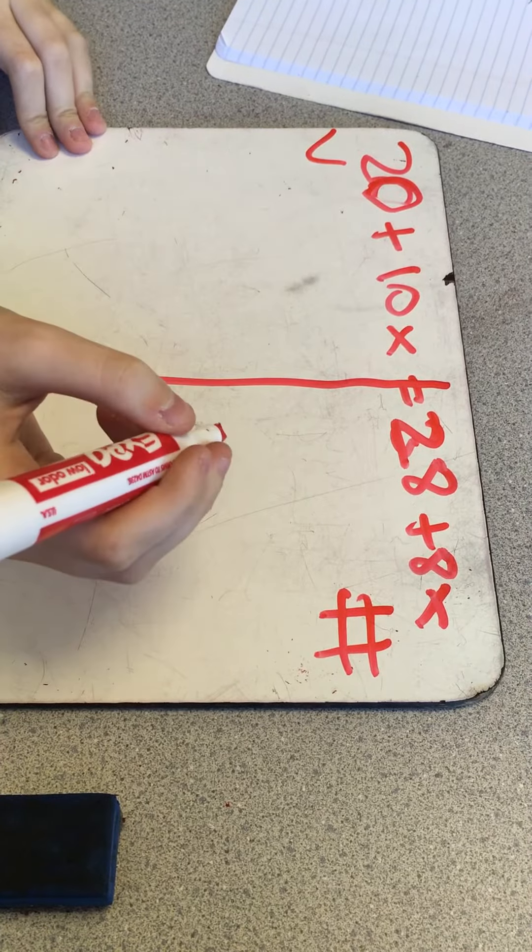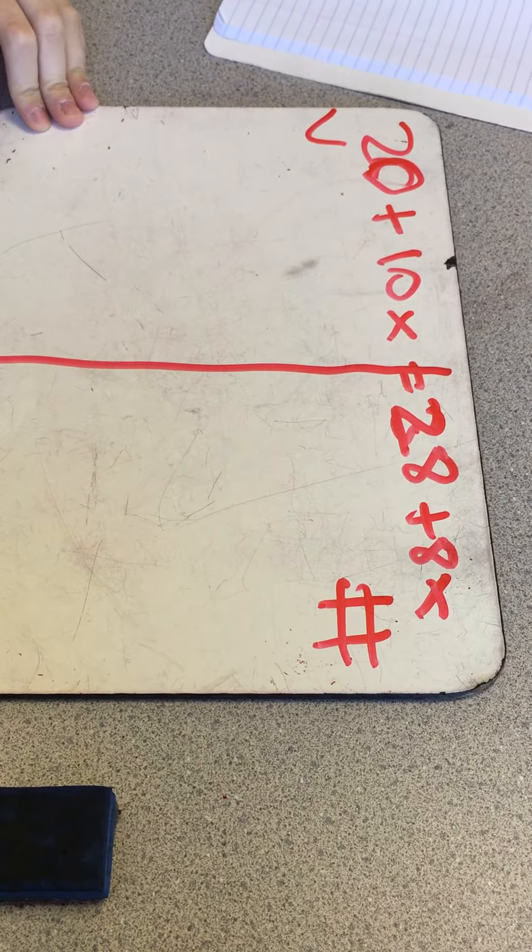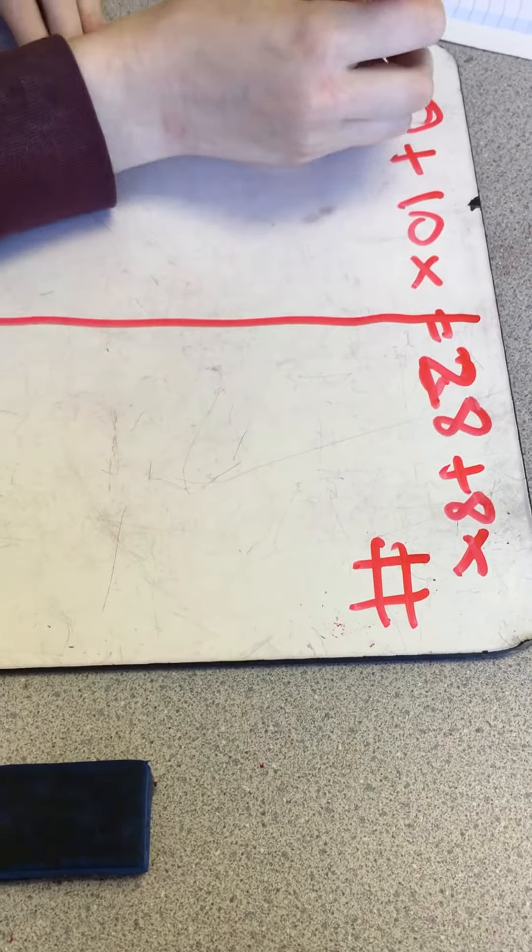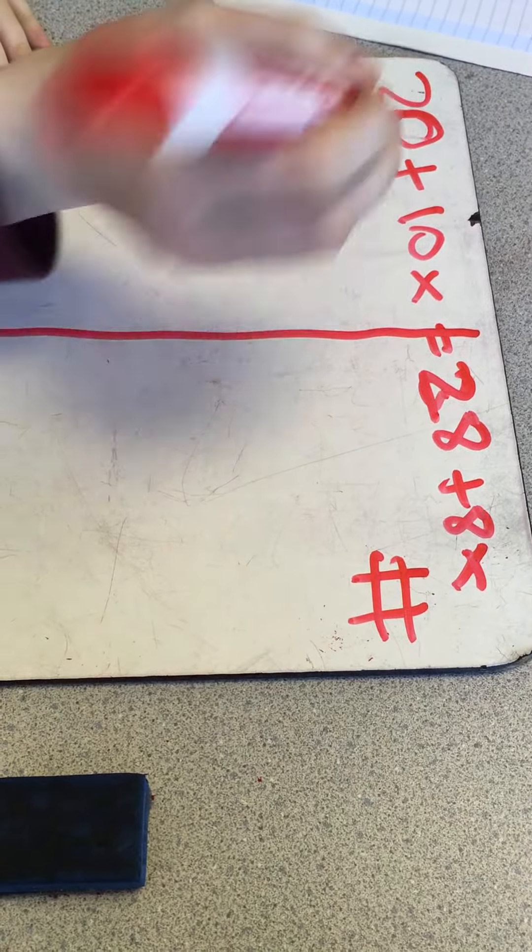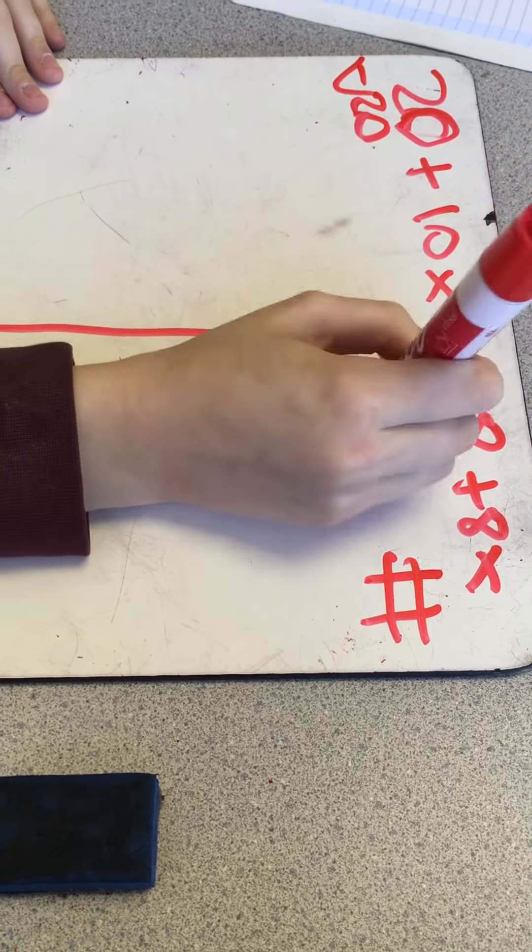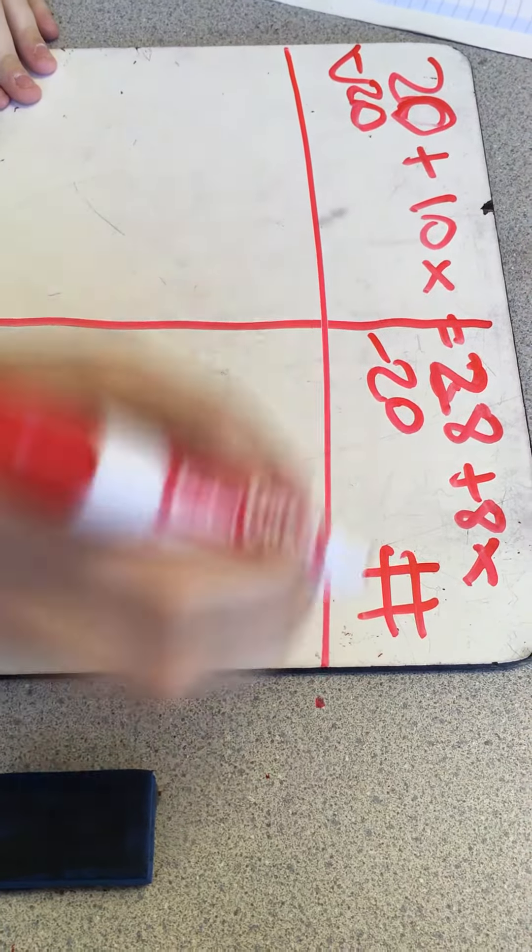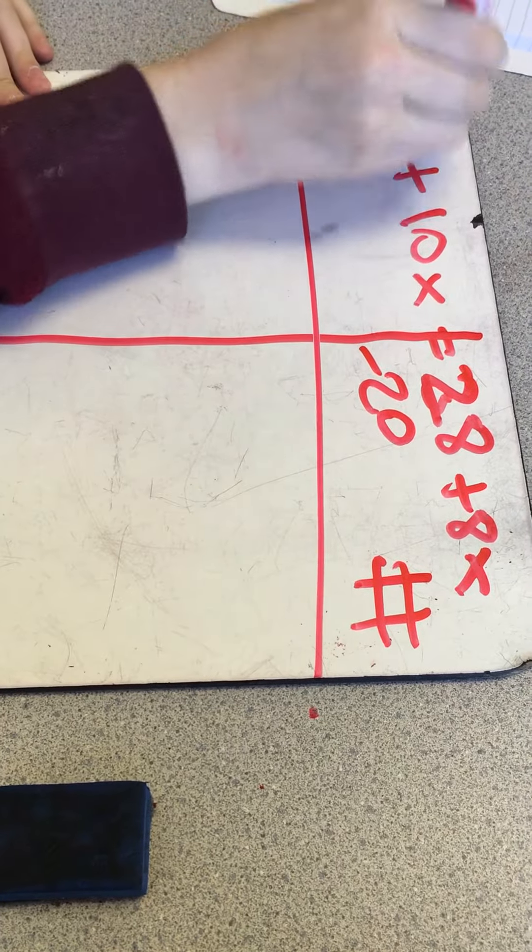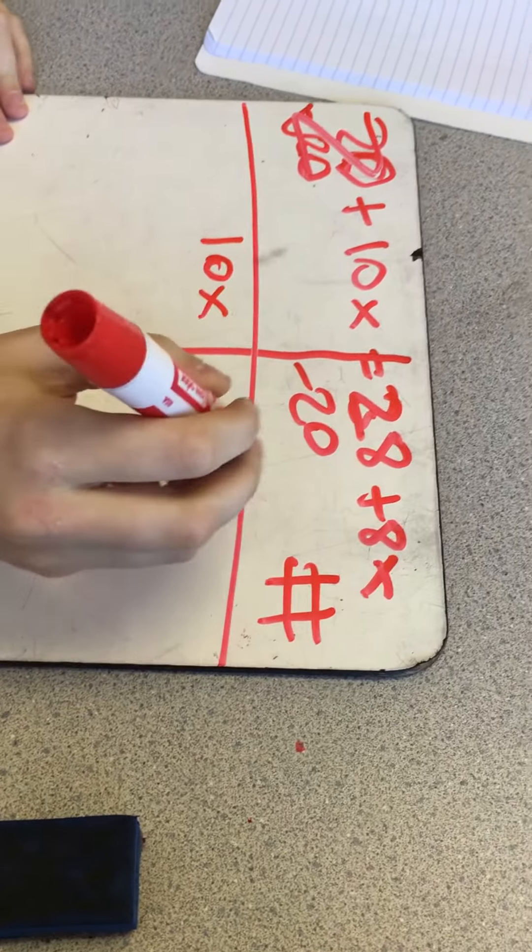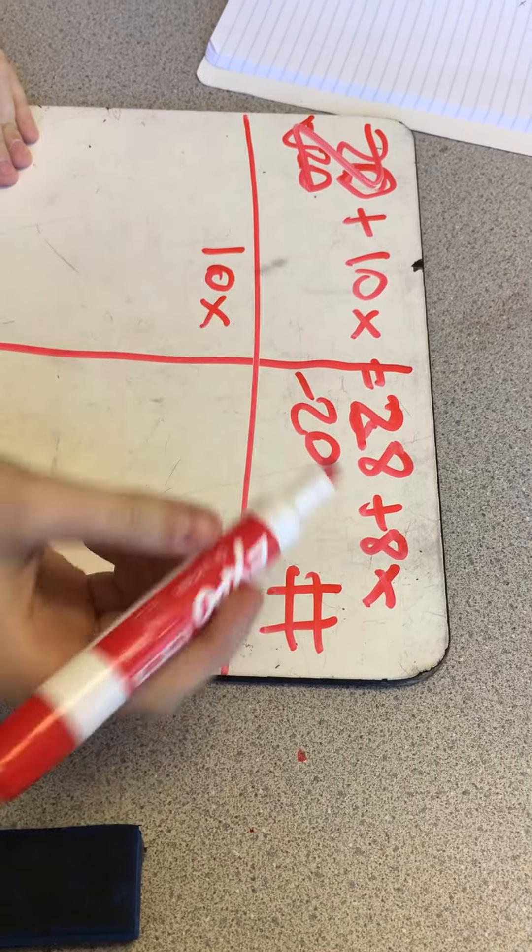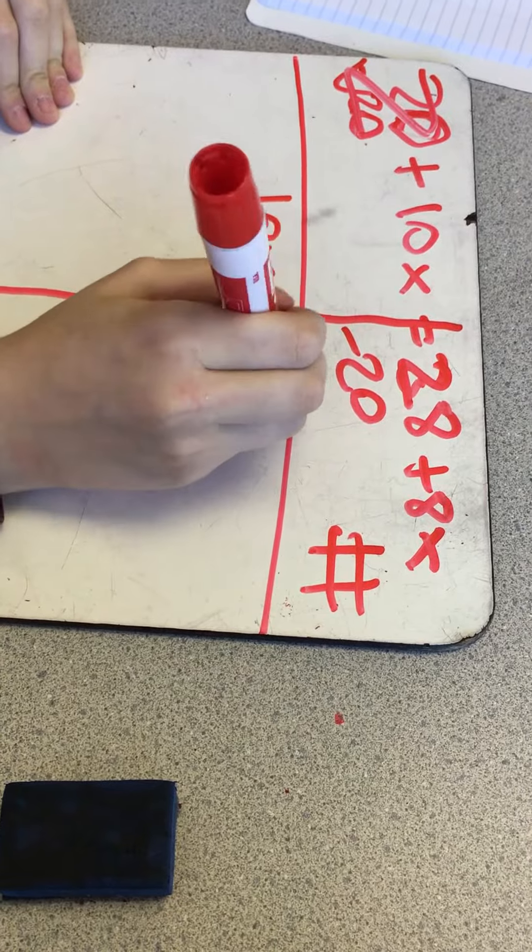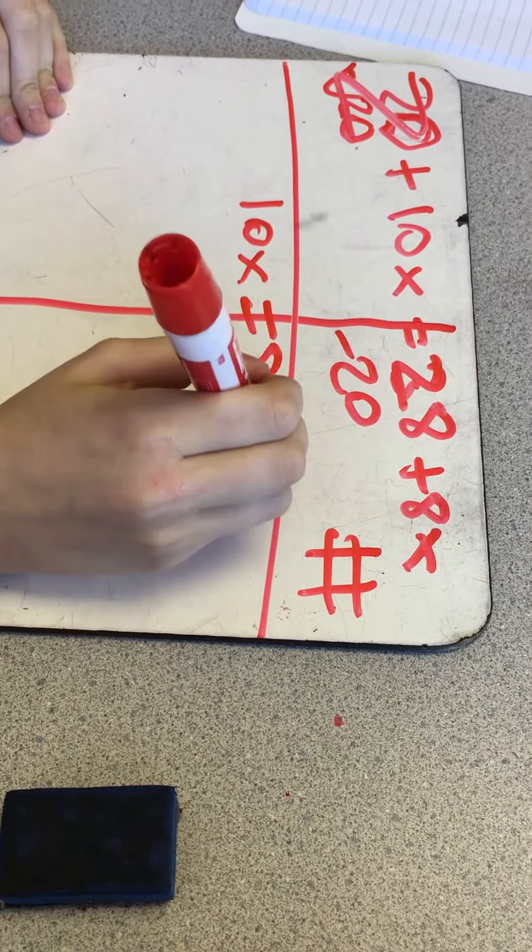You have to minus stuff from each side. You want to minus 20 from this because it's a lower number, and then what you do to one side, you have to do to the other. You have to do minus 20 on this side. Then you draw a line and then you have to move everything down. This is zero now because those have canceled out, so now this is just 10x. And now this is now 8 and this is 8x.